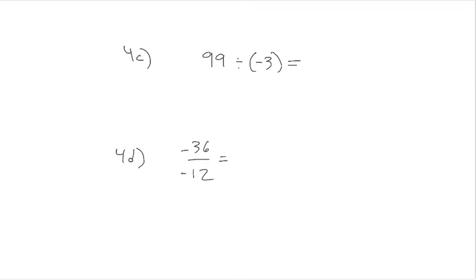Problem 4c is 99 divided by negative 3. It's funny how many people got this one wrong — this is one of those problems designed to play with your brain a little. 99 divided by 3 is 33. There were answers that said 30, and some that tried to multiply and said 298. But this is just 99 divided by 3, and one of the numbers is negative, so the answer is negative 33.